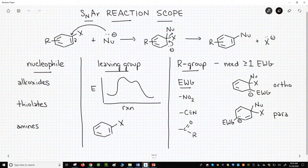Across the top of the screen is a general example of an SNAR reaction. There are three variables to this reaction – the nucleophile, the leaving group, and the R groups. We'll cover all three.